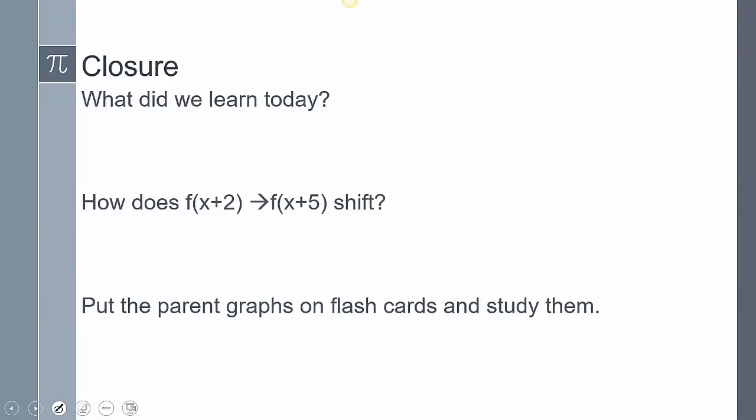In closing, today we talked about parent functions and how to perform rigid transformations — shifting left, right, up, and down. We also introduced seven different parent graphs: absolute value functions, parabolas, and others. I want to hear back from you — how do the two function representations shown shift compared to each other? Also, I recommend putting the parent graphs on flashcards and studying them, as knowing these parent graphs will make the process much easier in the future.